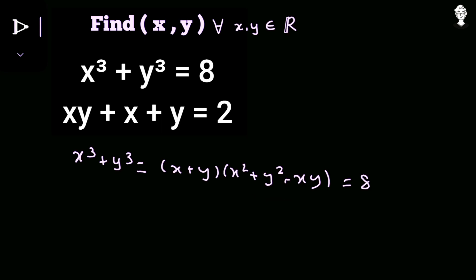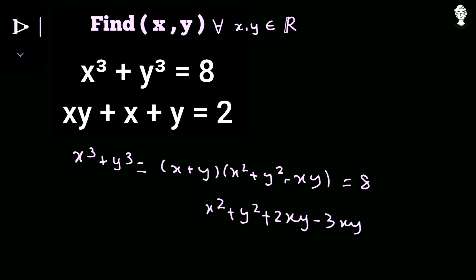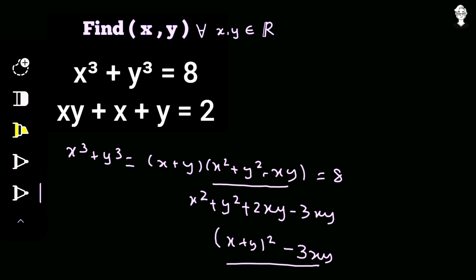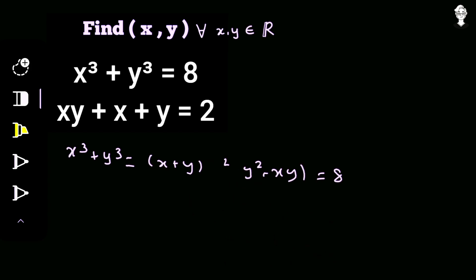Now the factor x² + y² − xy can be rewritten in another way. We rewrite it as x² + y² + 2xy − 3xy. Here, 2xy − 3xy gives negative xy, and x² + y² + 2xy is just (x + y)². So x² + y² − xy equals (x + y)² − 3xy.